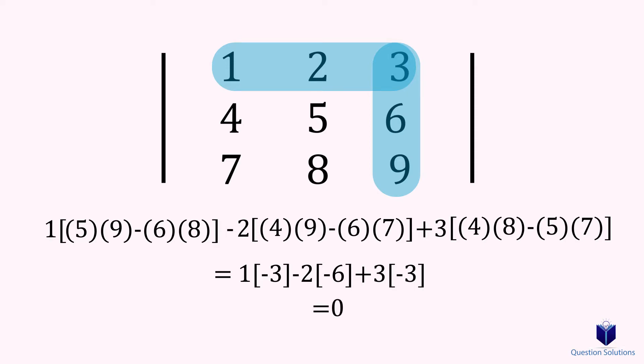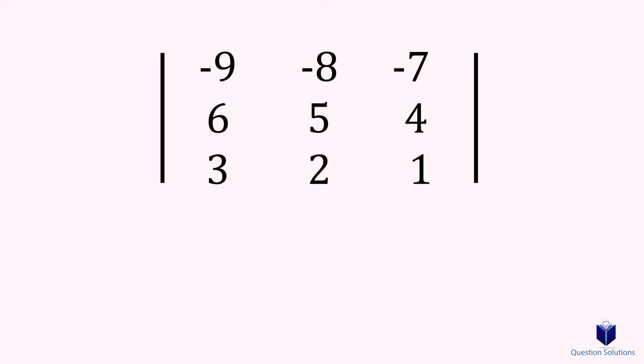Let's look at one last example. First, we cover the row and column, and find the intersecting number. We always start with a positive sign. Next, we cross multiply the uncovered numbers, subtracting one from the other.